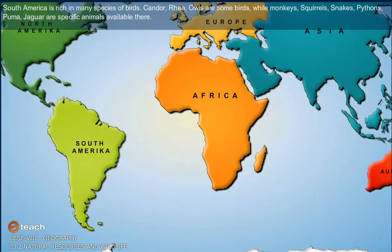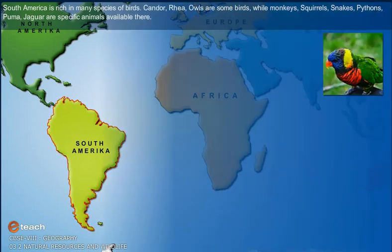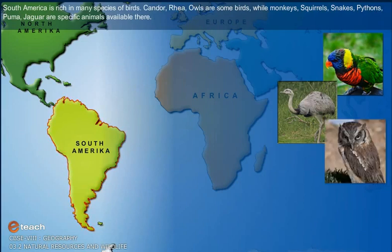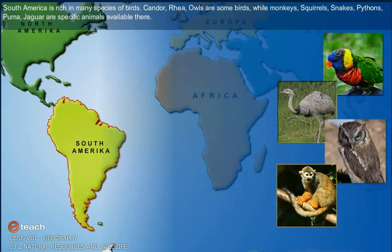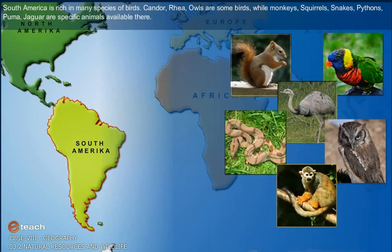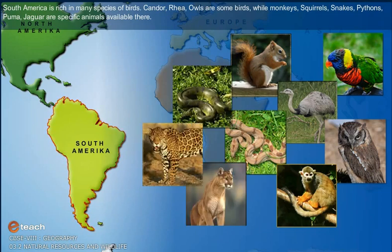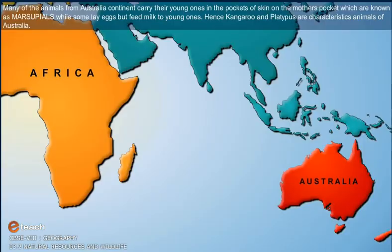South America is rich in many species of birds. Condor, rhea and owls are some birds. Wild monkeys, squirrels, snakes, pythons, puma and jaguar are specific animals available there.